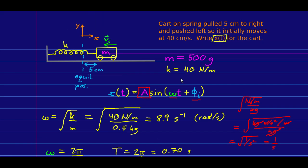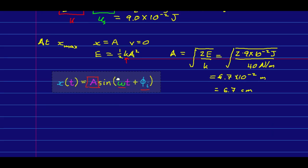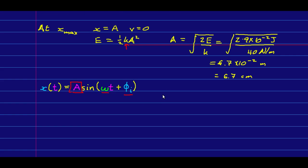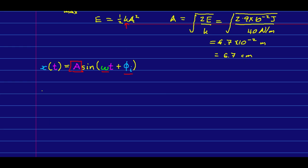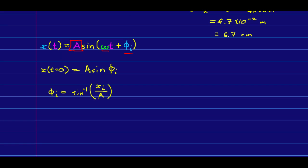The final thing we need to know is the initial phase. This is the part that gives students the most trouble, because it involves doing an inverse trig function. Most students are pretty shaky on inverse trig functions. At t equals zero, t just goes away. So we have that the initial position is A sine of the initial phase. Since we know x at t equals zero is five centimeters, and we know the amplitude, this is an equation where the only unknown is phi i. We can solve for phi i and plug in numbers.